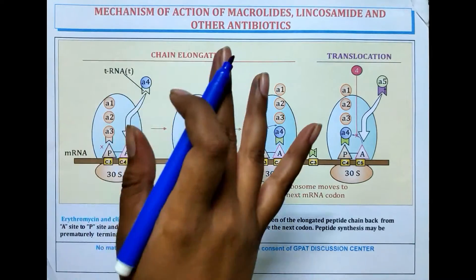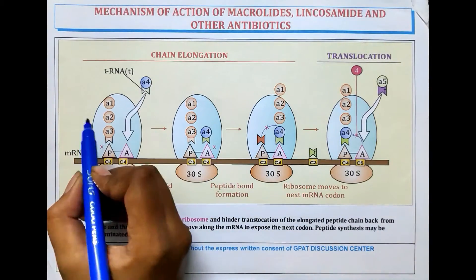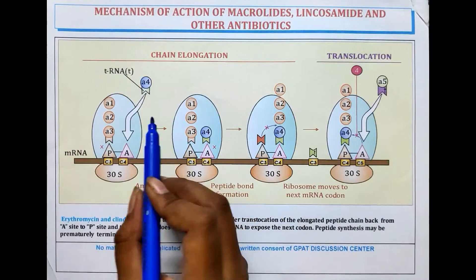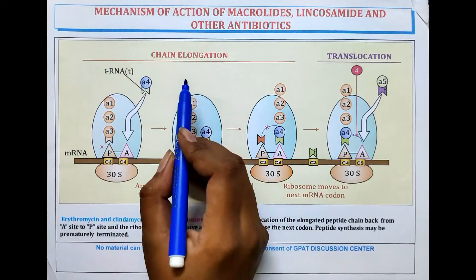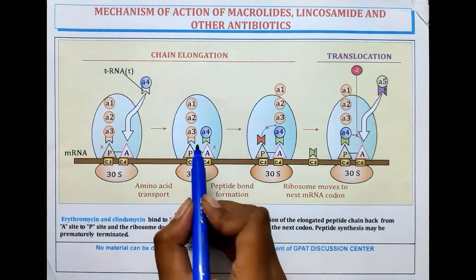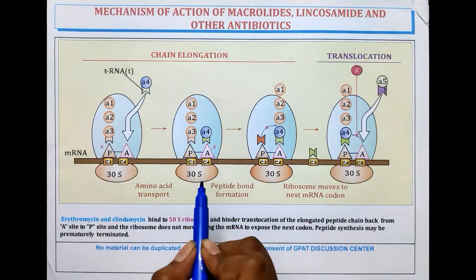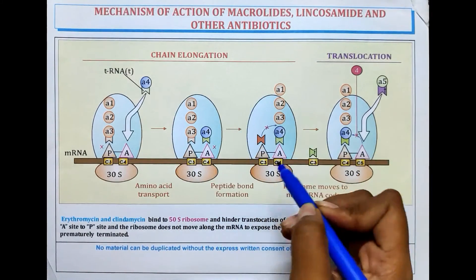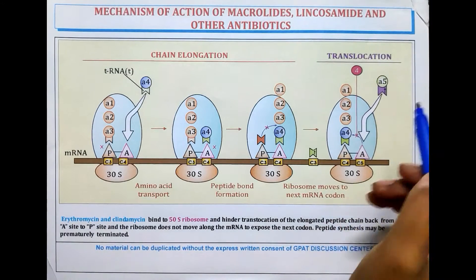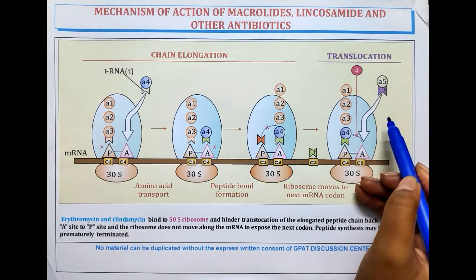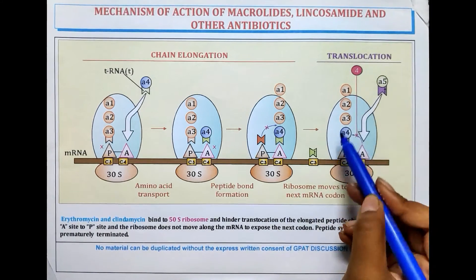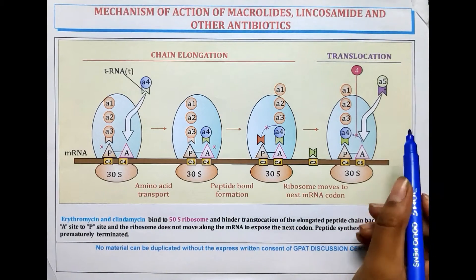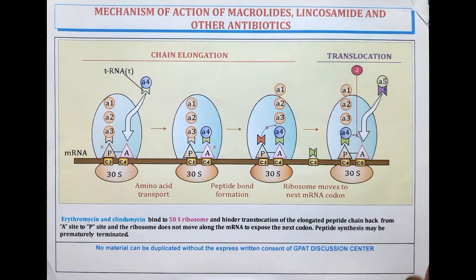The first step is the chain initiation step, in which amino acids are added by the assembly. In the second step, which is chain elongation, the amino acid chain is elongated and new amino acids are added. In the translocation step, the amino acids move from the A site to the P site so that a new amino acid can come to the A site.